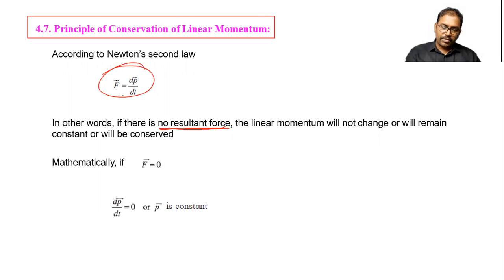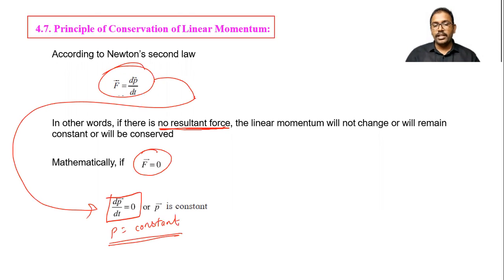Let us substitute here F is equal to 0. Then we get dP by dt is equal to 0. So d by dt of constant is coming zero, so we can write P is constant. So derivative of the constant is zero, so P is constant. P is a linear momentum. So if no external force acting on body, then linear momentum is conserved. And this is the principle of conservation of linear momentum.